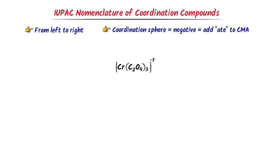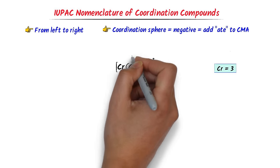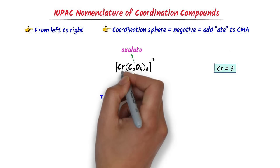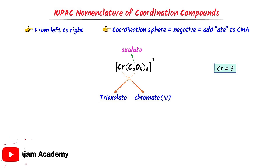Finally, consider this coordination compound. Pause the video and try to write its IUPAC name. There is already a negative charge present on it. The oxidation state of chromium is 3. Remember that C2O4 is a ligand known as 'oxalato'. We can see that there are 3 oxalates, so I write 'trioxalato'. The central metal atom is chromium and the charge on the coordination sphere is negative, so I write 'chromate'. The oxidation state of chromium is 3. Thus I get 'trioxalatochromate(3)'. Therefore, using this method we can easily name any coordination compound.